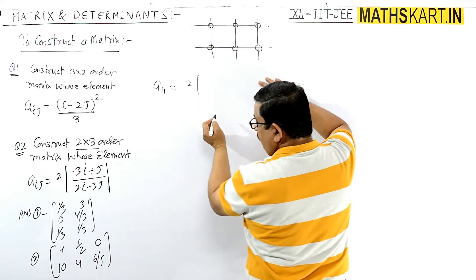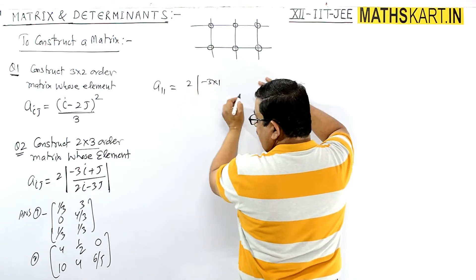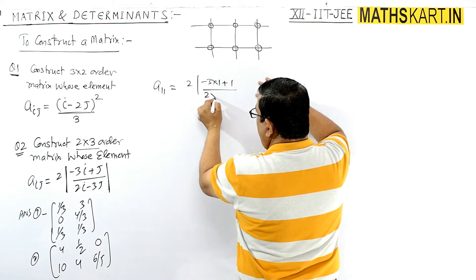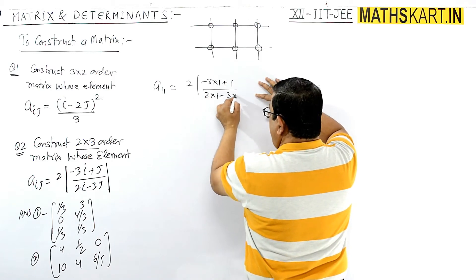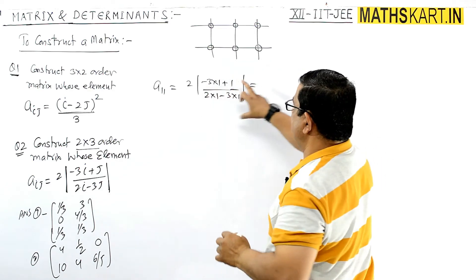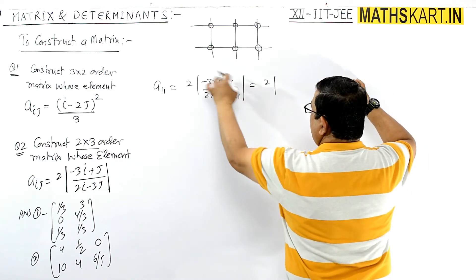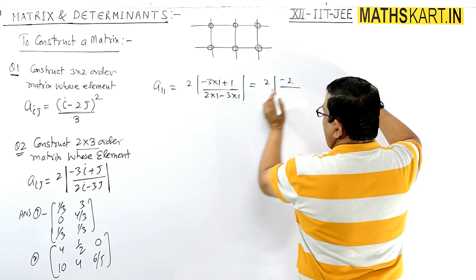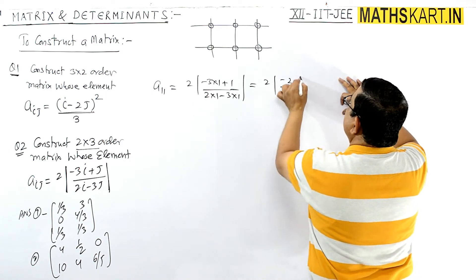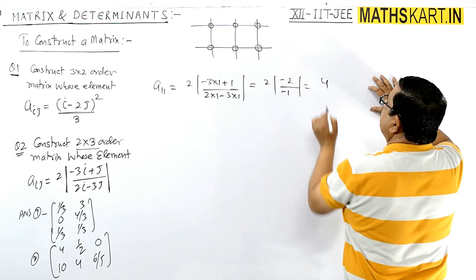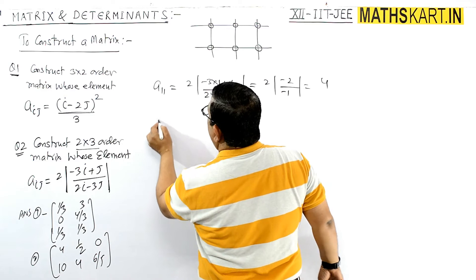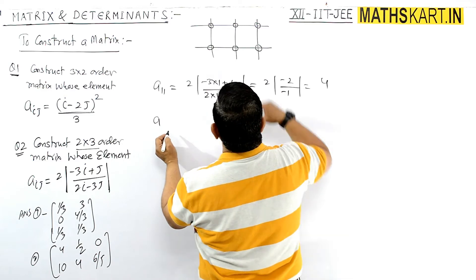A11 means first row, first column. Put i=1, j=1: 2 times of (minus 3×1 plus 1) divided by (2×1 minus 3×1). Solving: 2 × (−3+1) / (2−3) = 2 × (−2) / (−1) = 4. So A11 = 4.